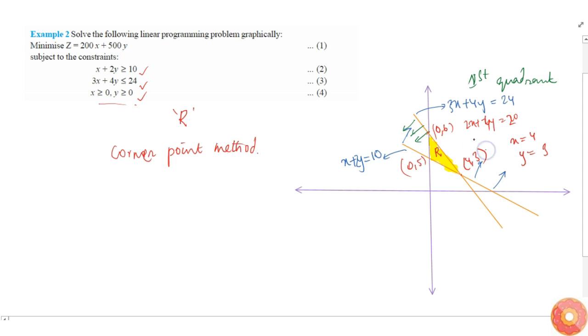We need to find at which corner the value of Z is minimum. Let's try to find it out. At (0,6), the value of Z is 3000. At this point (0,5), the value is 500 times 5, which is 2500.